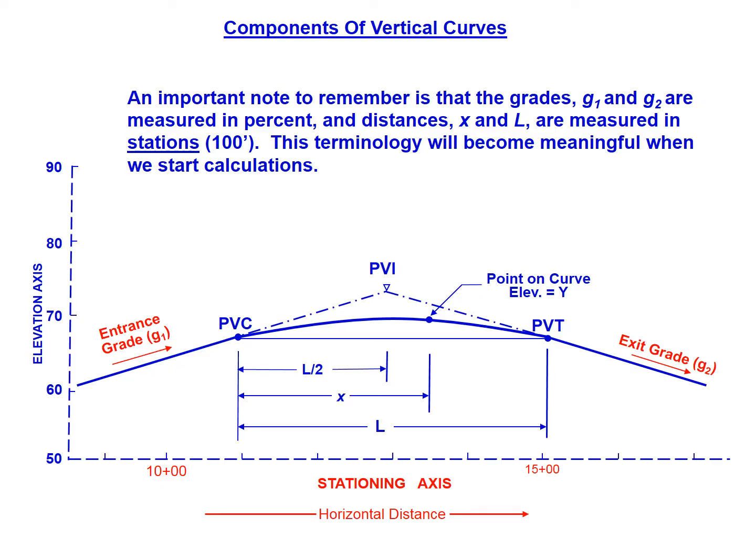These are very important when we start the calculation. Another important assumption for symmetric parabolic curves is that the PVI is always halfway between the PVC and PVT. Using that relationship can usually help us find some missing information. PVC plus L over 2 will get you to the PVI, and then another half of the length will take you all the way to the PVT.